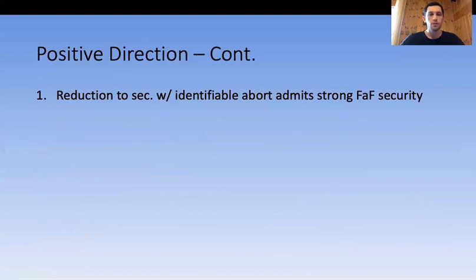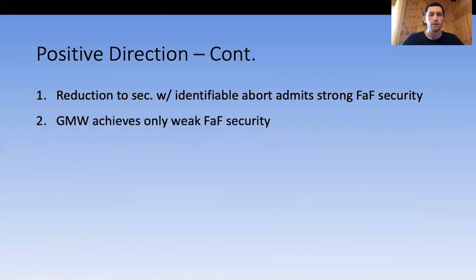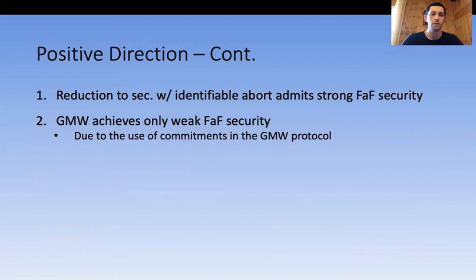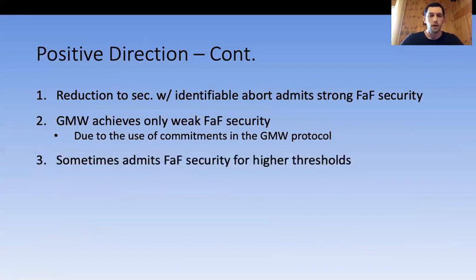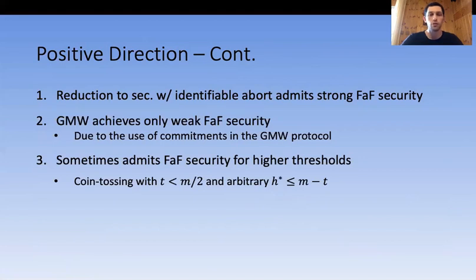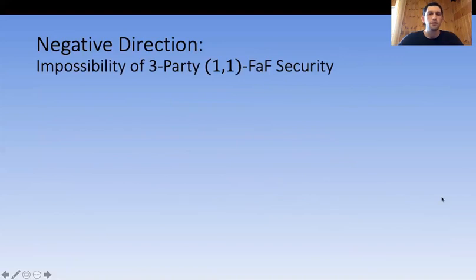Why is this protocol secure? The joint view of the adversary and the semi-honest parties is strictly less than the number of shares required to reconstruct. The reduction to identifiable abort admits strong FaF security; however, the full protocol achieves only weak FaF security due to the commitment scheme in GMW. Notably, this protocol sometimes achieves FaF security for even higher thresholds for specific functionalities — such as coin tossing with any uncorrupted majority (H* can be anything, but T must be strictly less than half), and three-party XOR with (1,1)-FaF security.